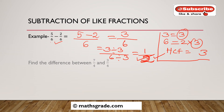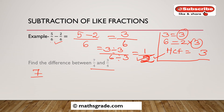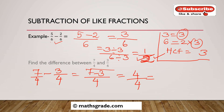This is the answer. The second example: find the difference between 7/4 and 3/4. Both are like fractions because the denominators are equal, that is 4. We have to subtract 7/4 minus 3/4. Just write down the denominator and subtract the numerators: 7 minus 3 is 4. So 4 divided by 4 equals 1. Therefore, 7/4 minus 3/4 equals 1, and this is the answer.